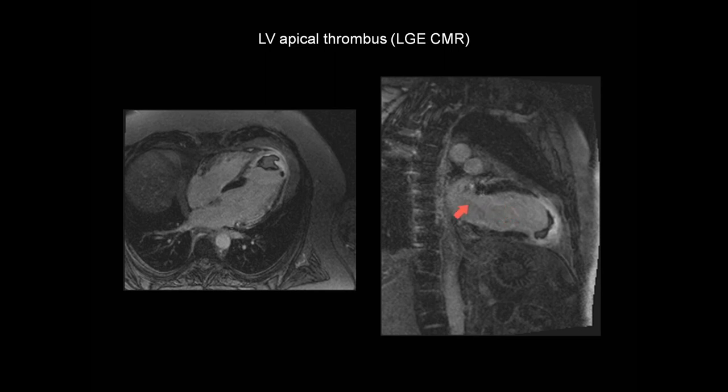This is a two-chamber view — left ventricle and left atrium. And again, there is late gadolinium enhancement, virtually full thickness throughout much of the apex.